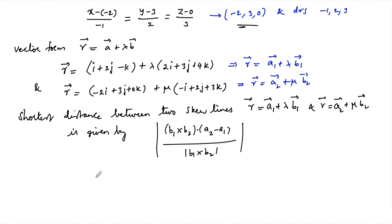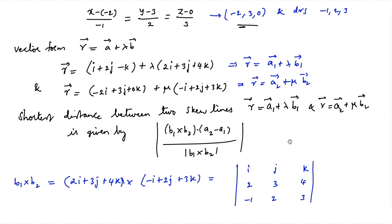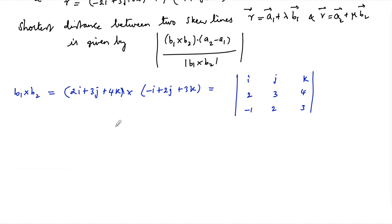We have b₁ = 2i − 3j + 4k and b₂ = −i + 2j + 3k. Computing b₁ × b₂ using the determinant with rows i, j, k and scalar components 2, −3, 4 and −1, 2, 3.